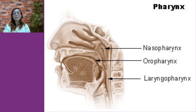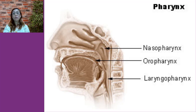The nasopharynx is the portion of the pharynx that is posterior to the nasal cavity and extends inferiorly to the uvula. The oropharynx is the portion of the pharynx that is posterior to the oral cavity. The most inferior portion of the pharynx is the laryngopharynx, which extends from the hyoid bone down to the lower margin of the larynx. The upper part of the pharynx lets only air pass through, while lower parts permit air, foods, and fluids to pass.